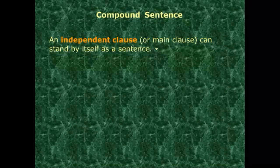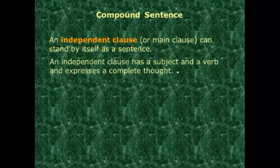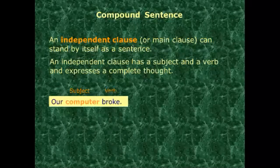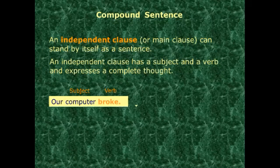The independent clause has a subject and a verb and expresses a complete thought. Example of an independent clause: 'Our computer broke.' This is a complete sentence on its own — it's an independent clause, not yet a compound sentence.